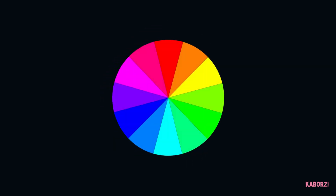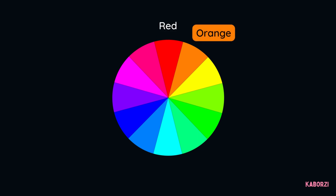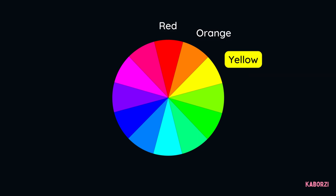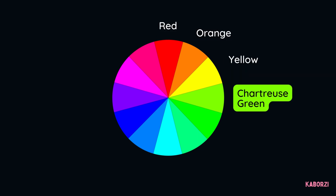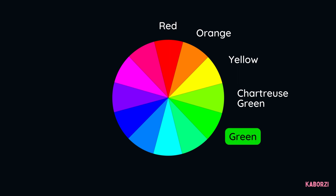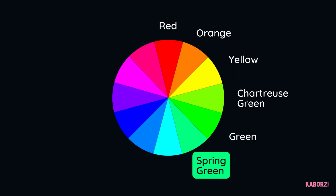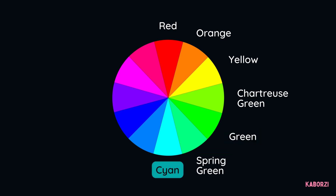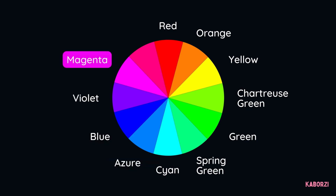In the RGB Wheel, the 12 main colors are red, orange, yellow, chartreuse green, green, spring green, cyan, azure, blue, violet, magenta, and rose.